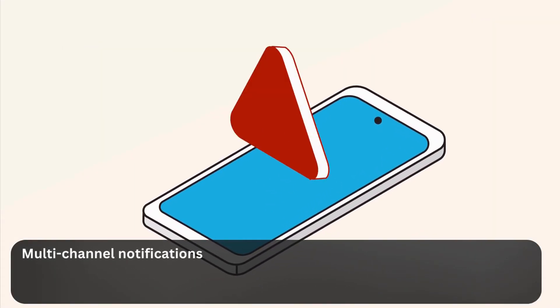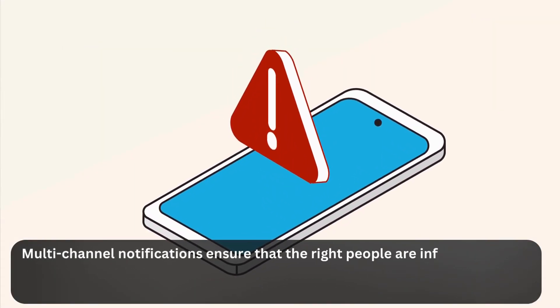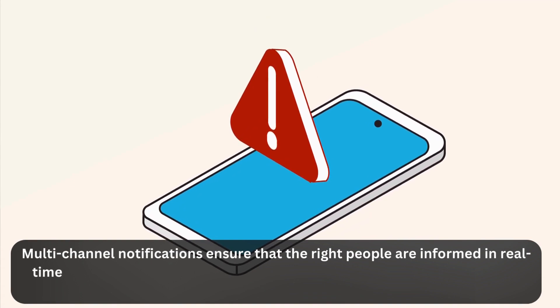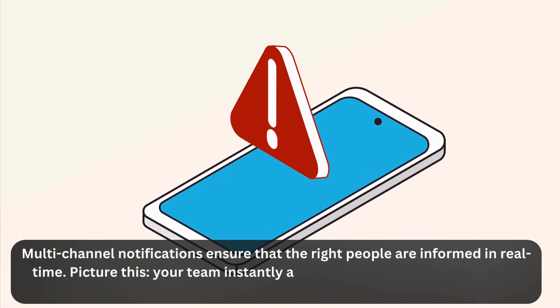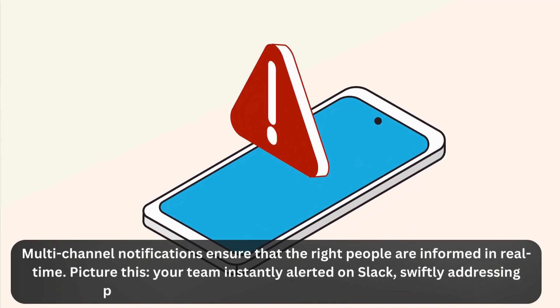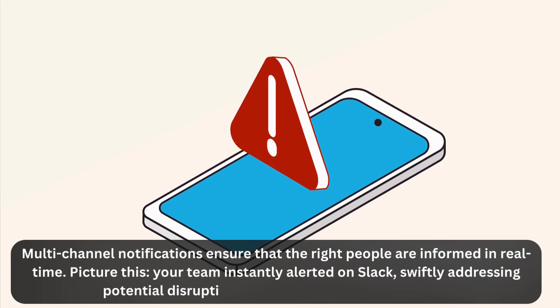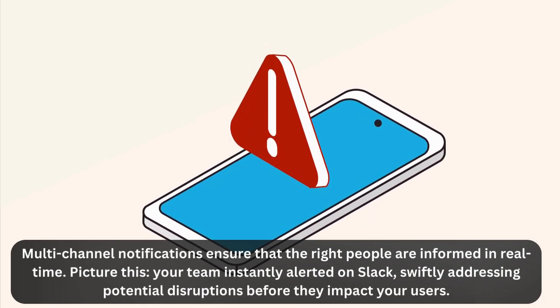Multi-channel notifications ensure that the right people are informed in real-time. Picture this: your team instantly alerted on Slack, swiftly addressing potential disruptions before they impact your users.